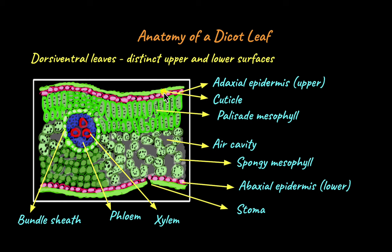Let's begin with the top surface of the dicot leaf, which is called the adaxial surface. The epidermis, which is the outermost layer found on the top surface of the dicot leaf, is called the adaxial epidermis or the upper epidermis. Above the adaxial epidermis is a layer of waxy cuticle. Cuticle is a layer that prevents excess water loss through transpiration from leaves.